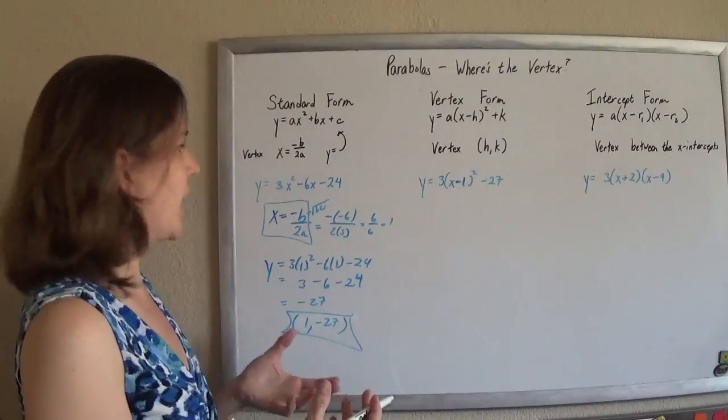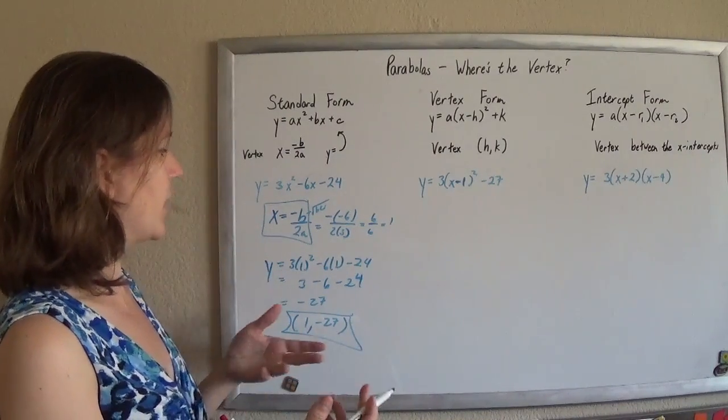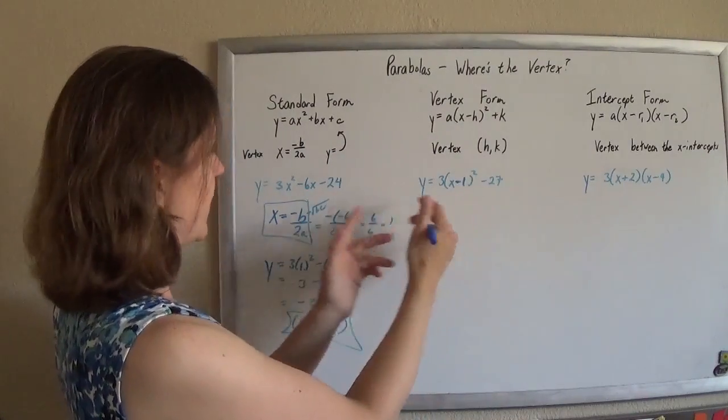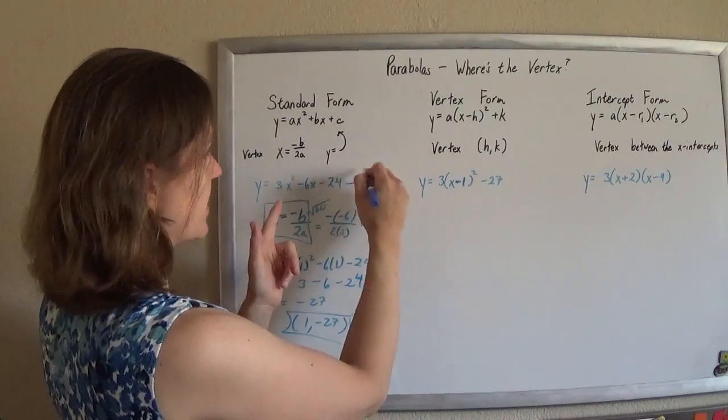But it seems a little cheap, right? Like negative b over 2a, where did that come from? Well, it turns out it comes from completing the square. So if I completed the square from this guy to this guy, then I would get it in this form.